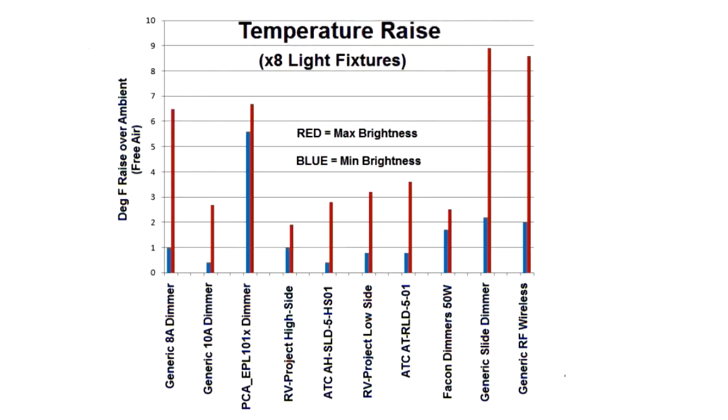In this test, we compared the temperature rise within the dimmer itself between the maximum brightness versus the maximum dimness. And the red lines are at the maximum brightness. The blue lines are at the minimum brightness. For example, with this generic slide dimmer, it experienced about a two-degree rise in temperature when the LEDs were fully dimmed, and a nine-degree rise in temperature when the LEDs were fully bright. Realize that this is in free air. So, for instance, this generic slide dimmer, this one is a panel mount, and it's designed to have a hole cut in the wall, and it mounted in the wall semi-flush.